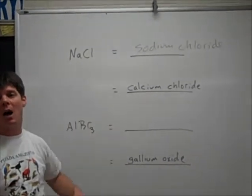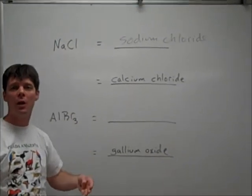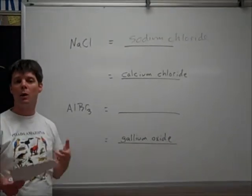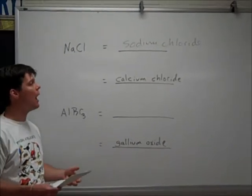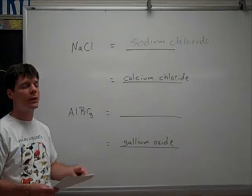So sodium chloride is a combination of a positive-one sodium ion and a minus-one chloride ion. So we're going to get a one-to-one ratio of the ions, which gives us an electrically neutral compound.